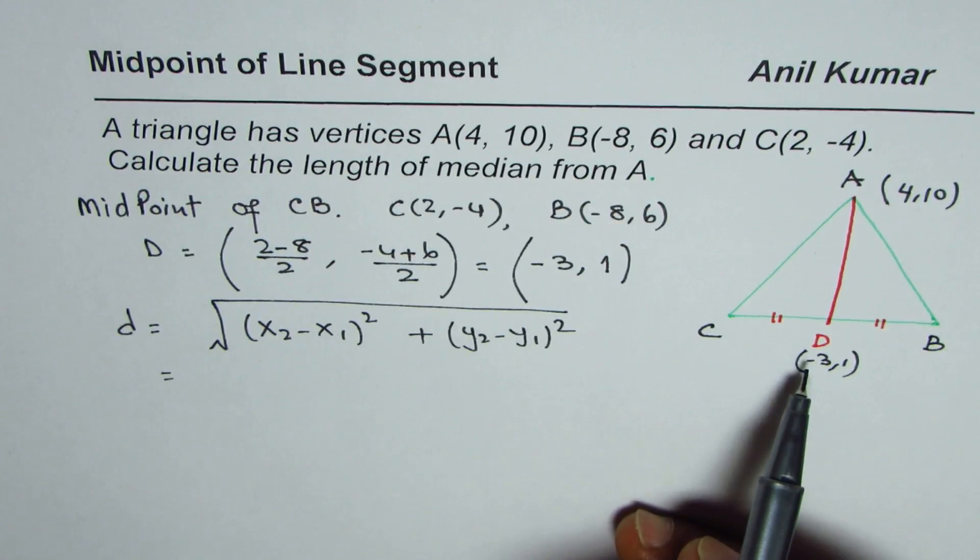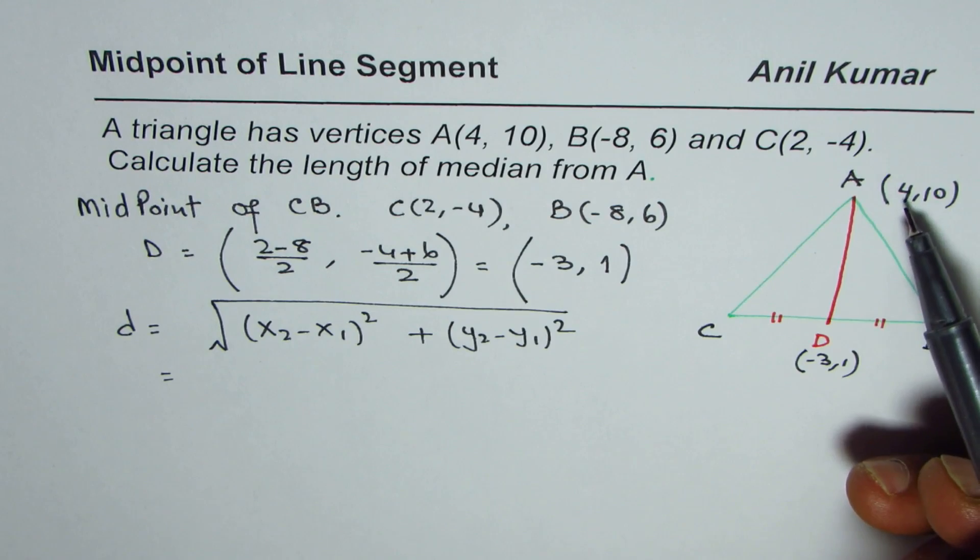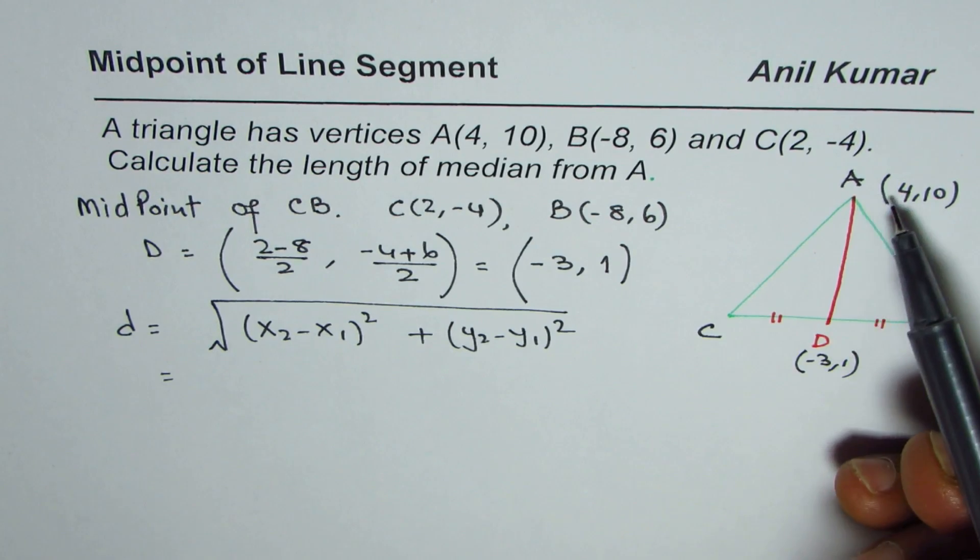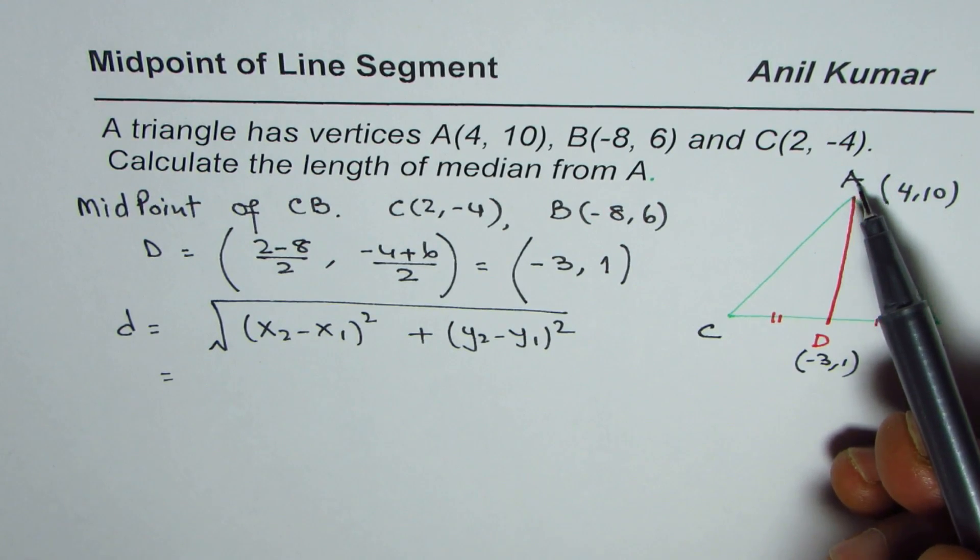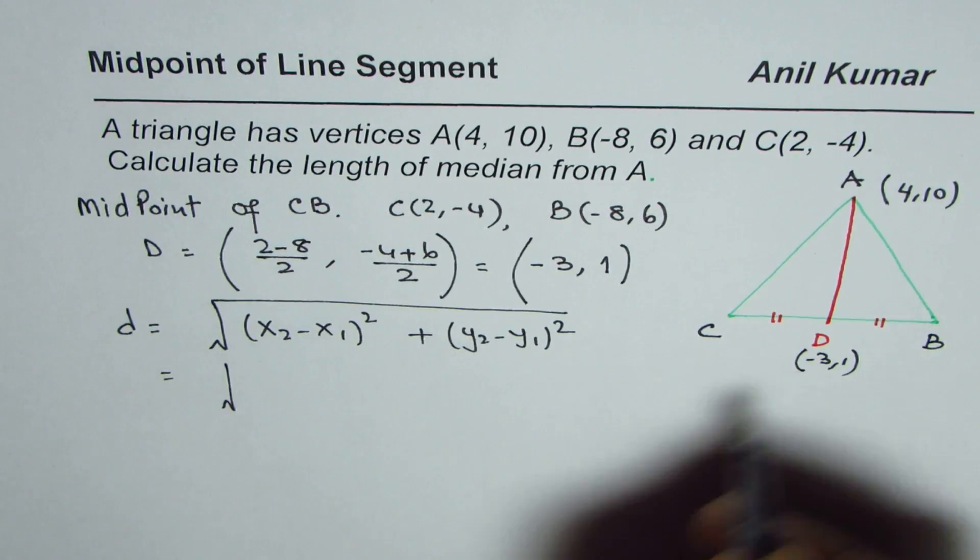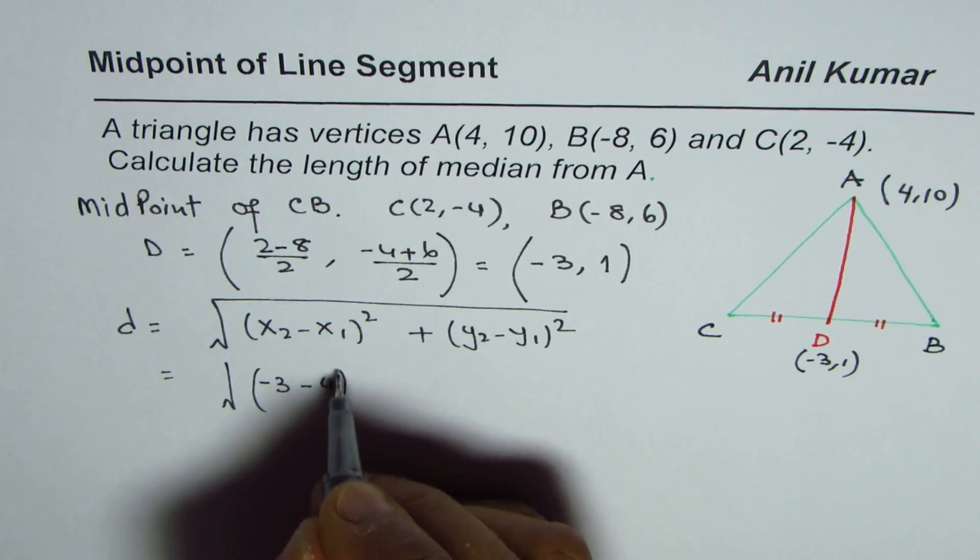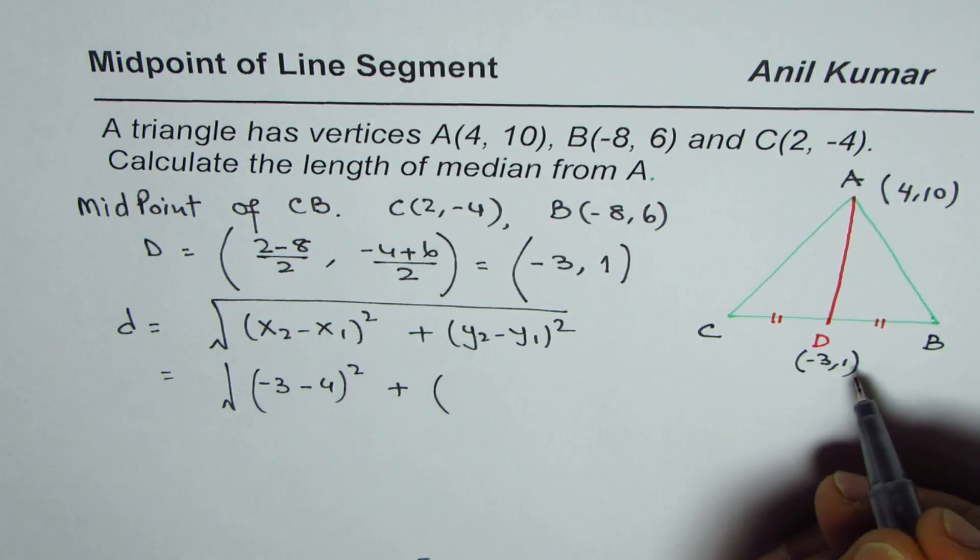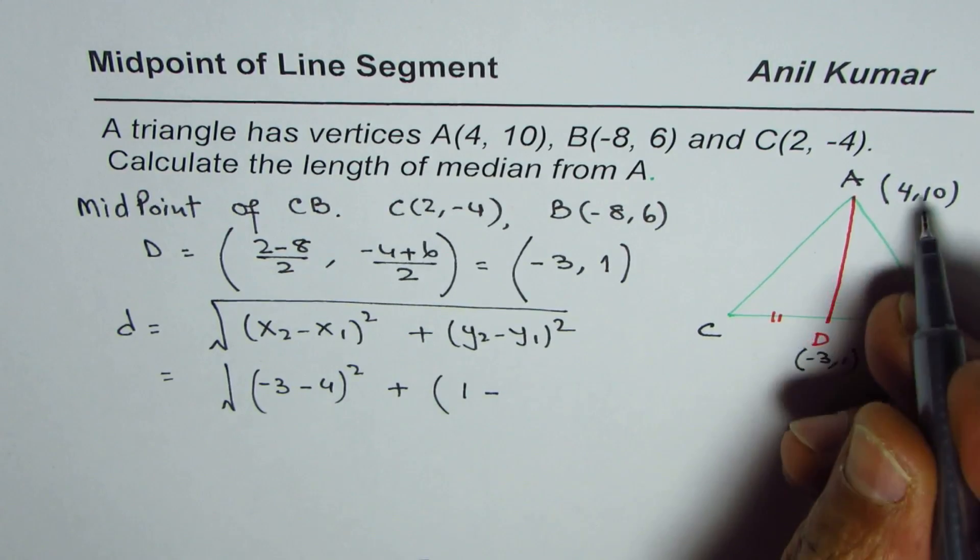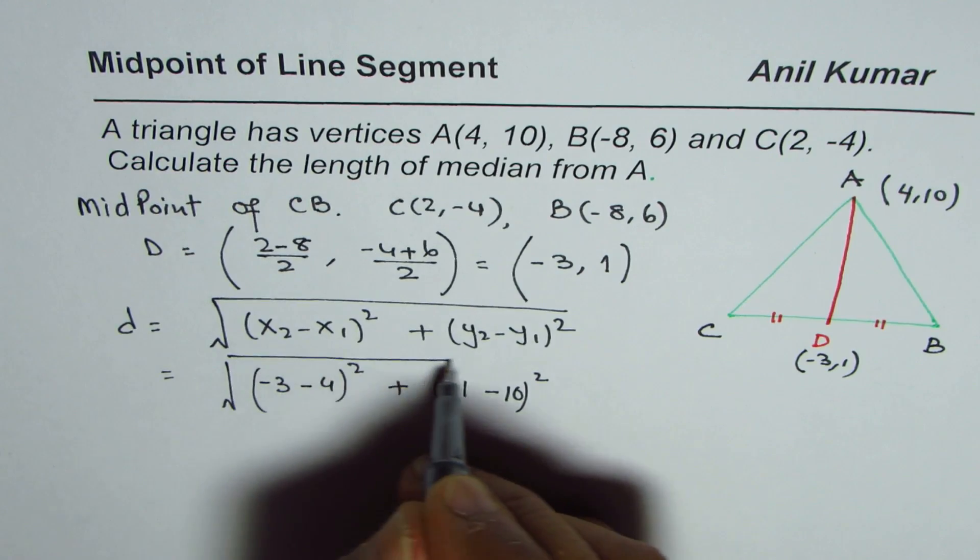Now here we know x1 and x2 - we can treat x1 as point A and x2 as -3. So that is square root of (-3 minus 4) whole square plus (1 minus 10) whole square.